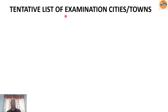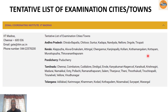The tentative list of examination cities: we come under the IIT Madras zone. For Andhra Pradesh, the cities are Chirala, Bapatla, Chittoor, Guntur, Kadapa, Nandyal, Nellore, Ongole and Tirupati. For Pondicherry, it is Puducherry. For Telangana, the cities are Adilabad, Karimnagar, Khammam, Kothur, Kothagudem, Nizamabad, Suryapet and Warangal. These are the exam centers available in this zone.